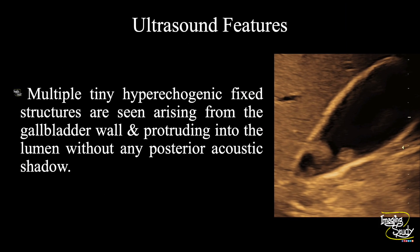In summary, multiple tiny hyperechoic fixed structures are seen arising from the gallbladder wall and protruding into the lumen without any posterior acoustic shadow, indicating them as gallbladder polyps.